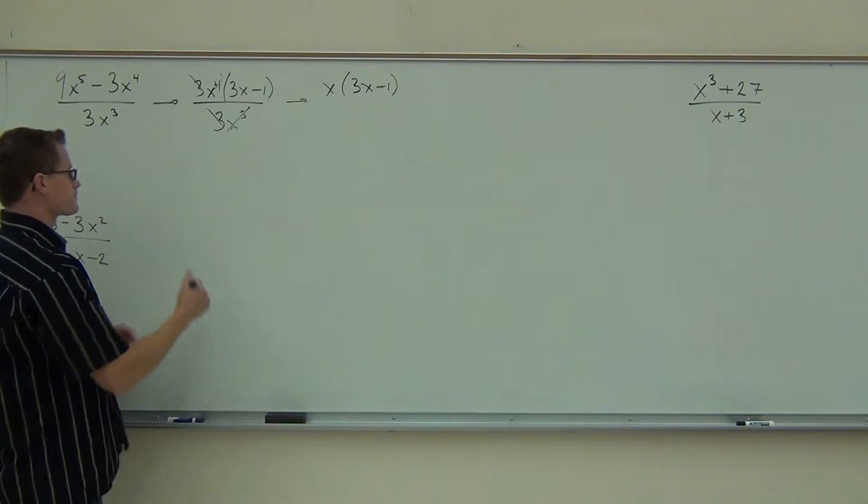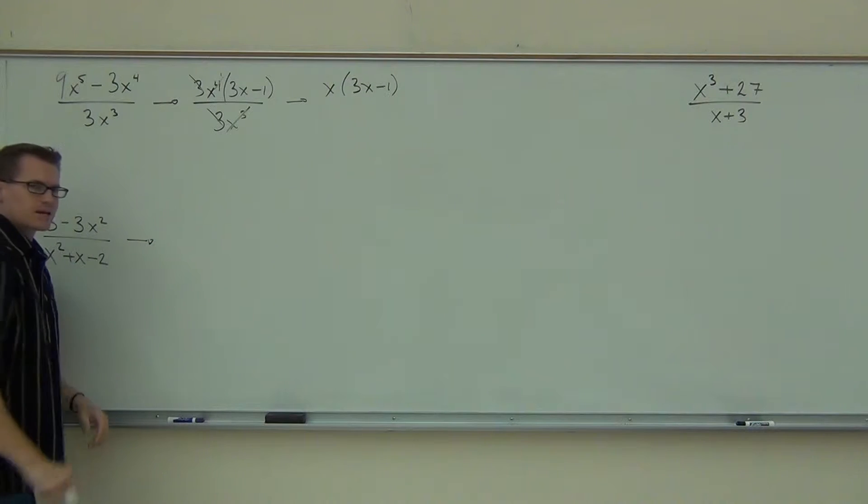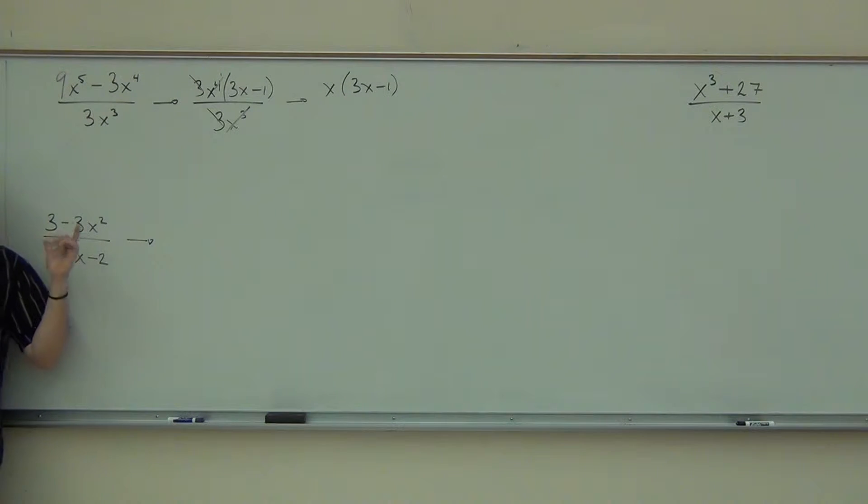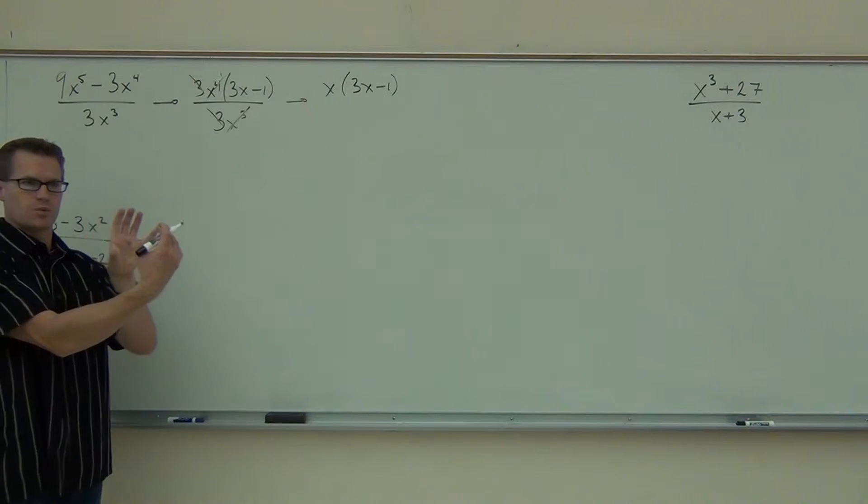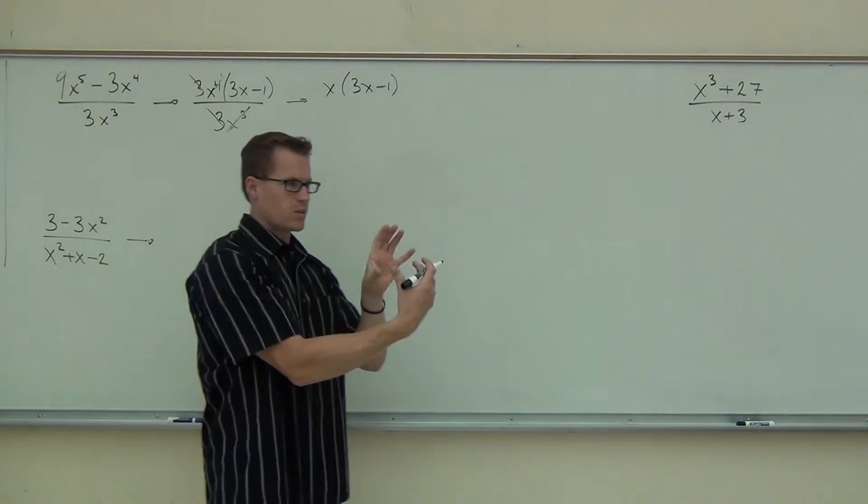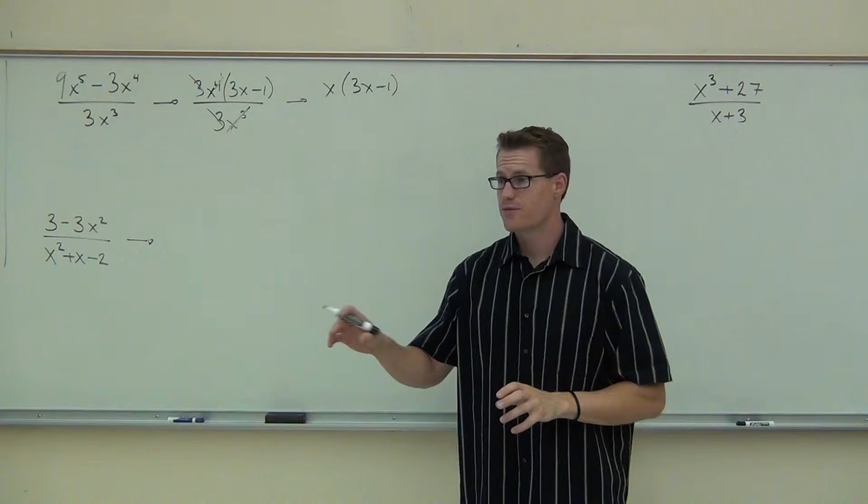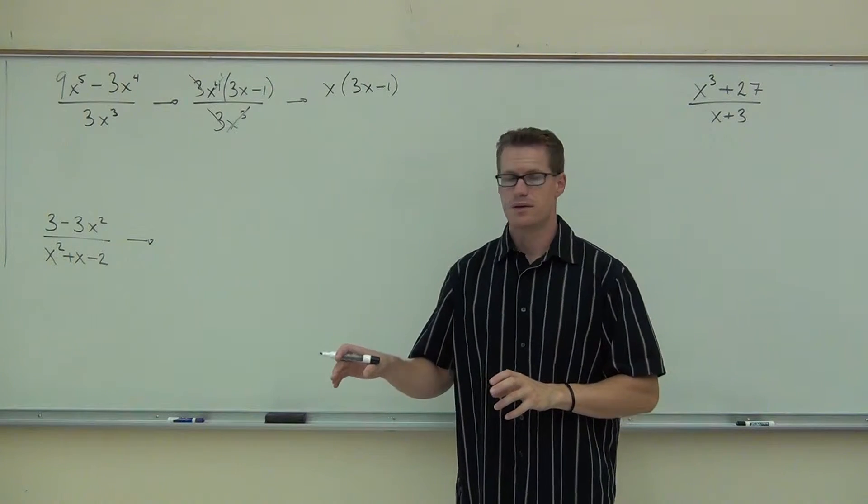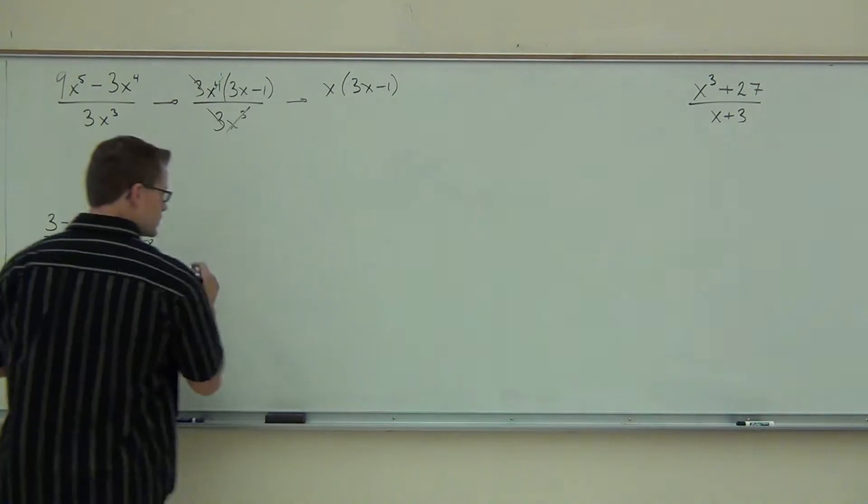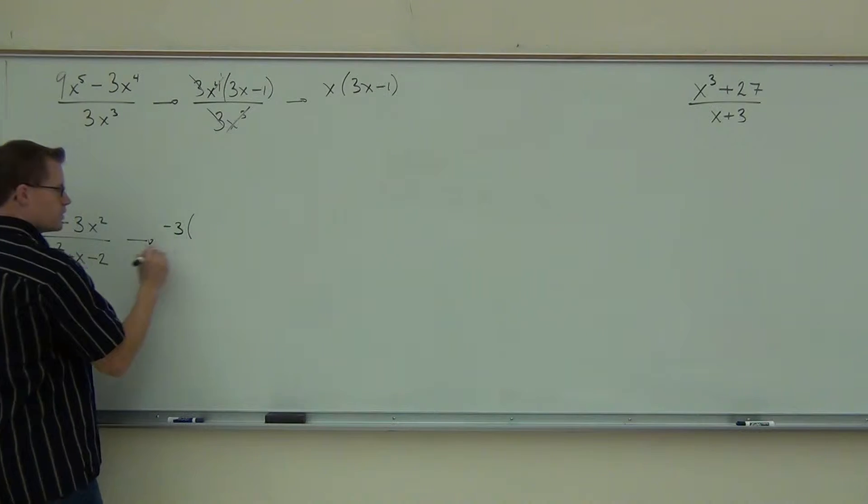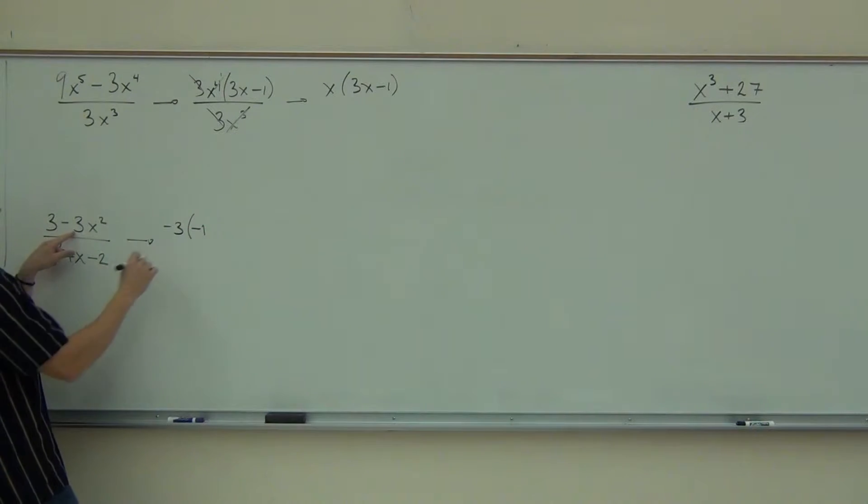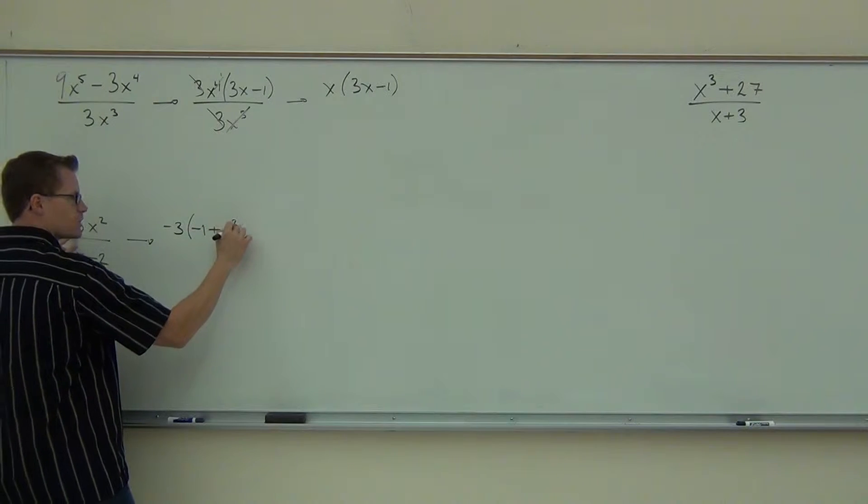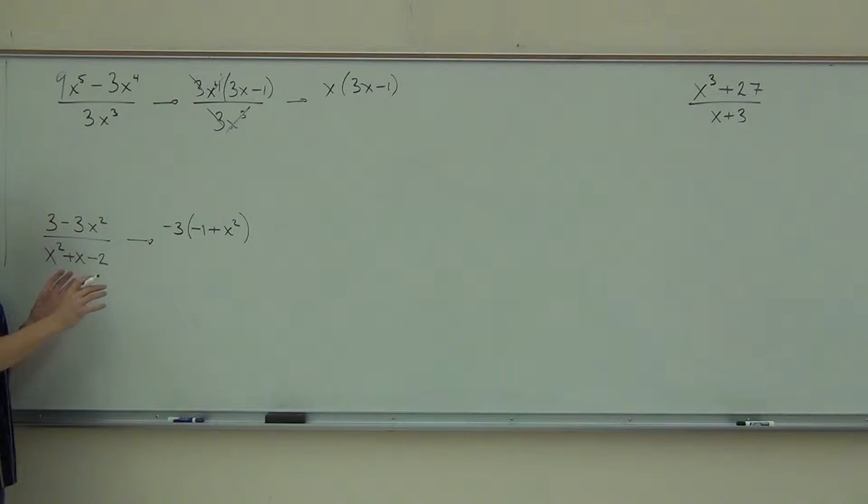The next one's a little bit more work. Let's look at the numerator. Notice how our x squared term, the term with the largest power, has a minus in front of it. What that tells me to do, you're going to factor out a negative. Did you try to factor out a negative from that? Negative 3. So if we factor out negative 3, you'll get from here negative 1, from here plus x squared. Do you see why the signs change?